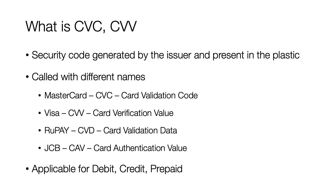CVC is a unique code generated by the issuer, used as a security feature. The issuer generates and puts the CVC value, which is only verifiable by the issuer. This CVC value is passed to the issuer during an authorization — basically when a transaction is performed — to validate if the transaction is done using a legitimate card. CVC is called with different names across various schemes: in Mastercard it is CVC (Card Validation Code), in Visa it is CVV (Card Verification Value), in Rupay it is CVD (Card Validation Data), and in JCB it is CAV (Card Authentication Value).